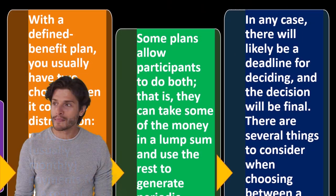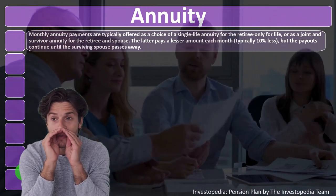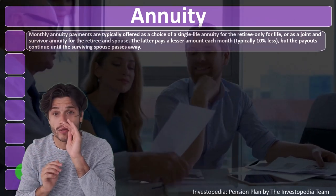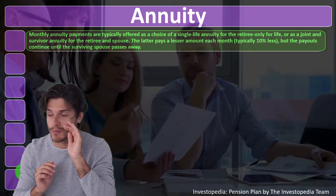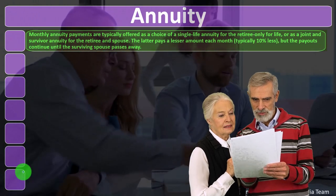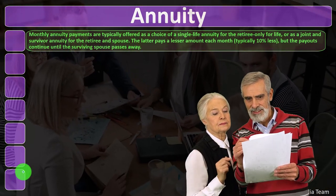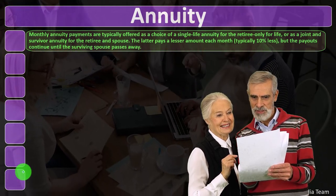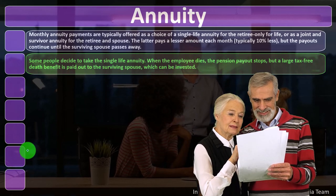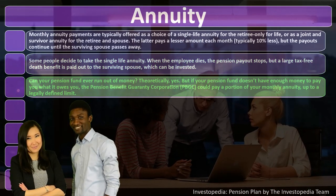Taking early retirement generally results in a smaller monthly payout. With a defined benefit plan you usually have two choices for distributions: periodic monthly payments for the rest of your life, or a lump sum distribution. Some plans allow both. There's a time value of money consideration — taking the lump sum upfront versus receiving money over an extended period — and you must also consider when payments end, typically upon death.